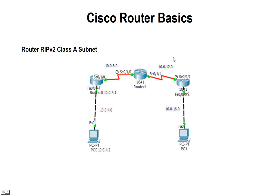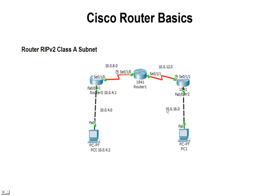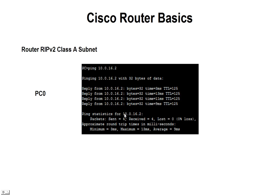Just an example of how you could apply the Class A. If we go ahead and ping after setting this up with RIP version 2 on all the routers, we find we're able to ping all the way over to 10.0.16.2 for the PC and 16.1 for the router. Going ahead and pinging, we can see we get our expected returns from 16.2.